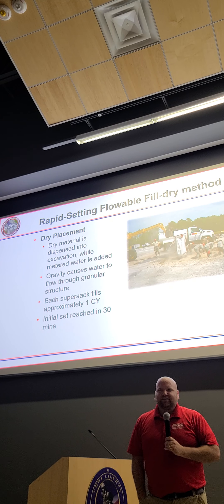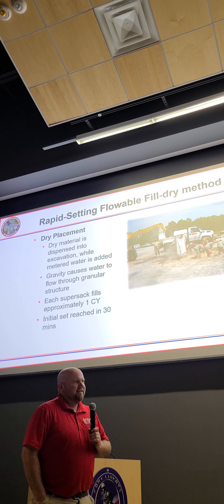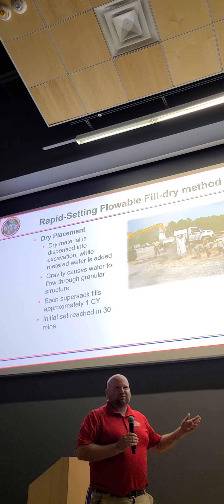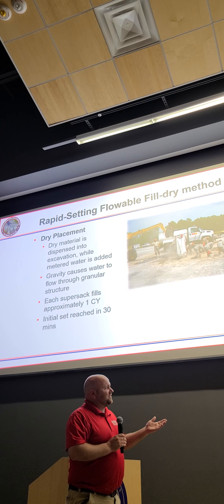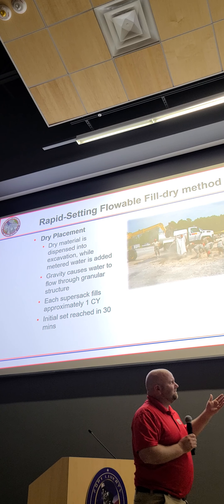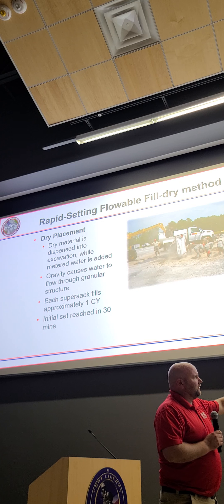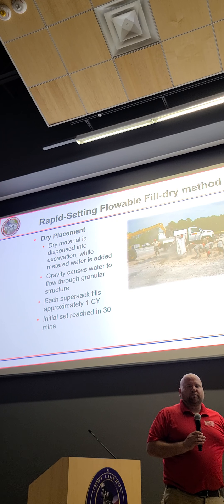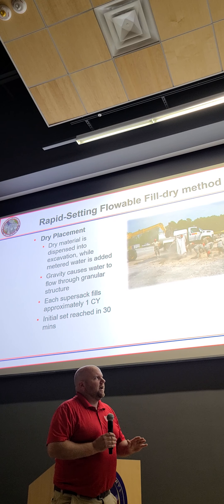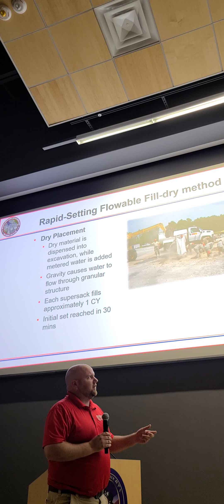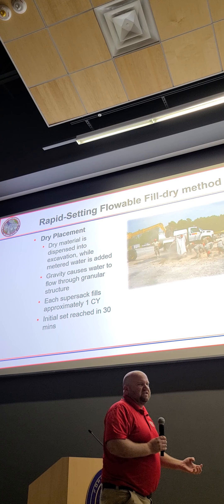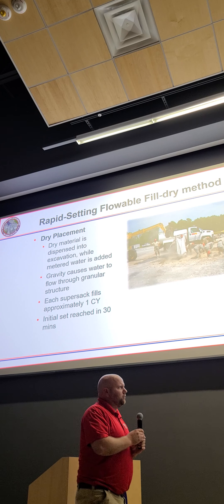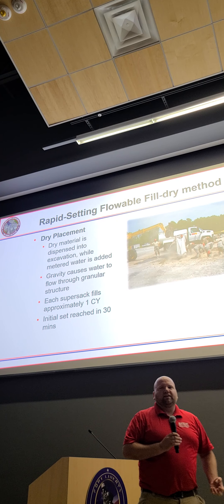I call it the dry method — my boss calls it the slash and splash method. Basically, you extend the super sack over your prepared crater that you've already excavated and that's ready for backfill. You cut the bag open and try to move your forklift around and move that dry material around as much as you can. Then you just sprinkle the water and it flows through and percolates through the material, causing it to start to hydrate and gain strength. Each one of those super sacks is about one cubic yard. The water will percolate typically in about 20 to 30 minutes.